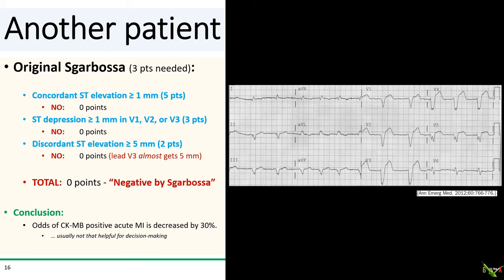Here's another patient who presented with chest pain and a left bundle branch block. Looking at the original Sgarbossa criteria, none are met: there is no concordant ST elevation anywhere, no anterior ST depression of 1 mm or more, and while there is discordant ST elevation in the anterior leads, it does not quite hit 5 mm. So this ECG is negative by the original Sgarbossa criteria, which decreases the odds of a CKMB-positive MI by only 30% — not particularly helpful for cath lab decision making.